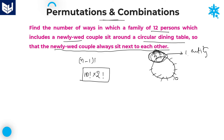Many students make the mistake of directly writing 12 persons in a circle as 11 factorial, but this is the wrong way of thinking. The condition is very important — the newly wed couple always sit next to each other. You need to take those two members as a single entity. Single entity plus 10 members equals 11 members, arranged in a circular manner: 10 factorial ways. Within the single entity, you can arrange the newly wed couple in 2 factorial ways. So 10 factorial into 2 factorial is the required answer.